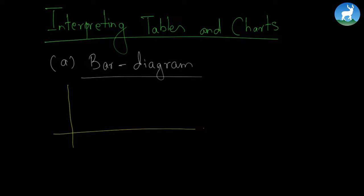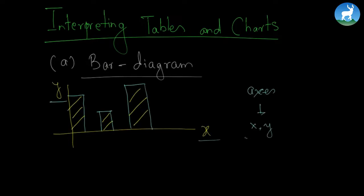Let's begin with the first one, which is called a bar diagram. A bar diagram consists of two different kinds of information. The first one is given in the x-axis and another one is given in the perpendicular axis, which is also known as the y-axis.